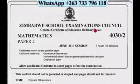Zimbabwe School Examination Council, General Certificate of Education Ordinary Level, Mathematics Paper 2. This is June 2017 session, two hours thirty minutes. The paper is two hours thirty minutes, so the most important thing here is to manage your time.